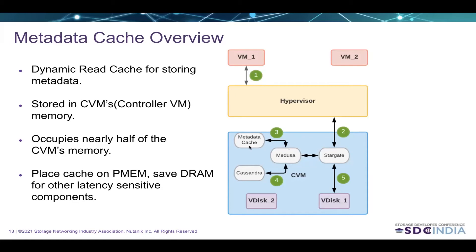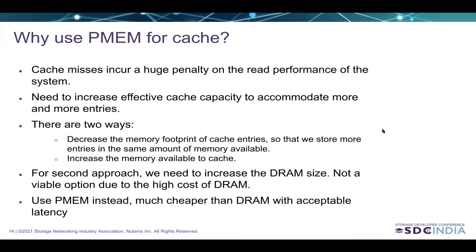This metadata cache is present in the CVM's main memory and takes up a large portion of CVM memory — it can go up to half of what the CVM gets. So if we use PMEM for our metadata cache, the DRAM that was originally held by the cache can be freed up for other latency-sensitive purposes.